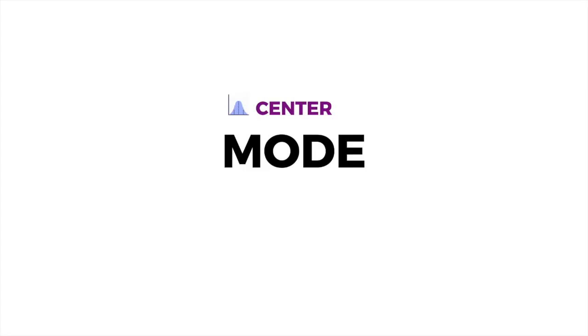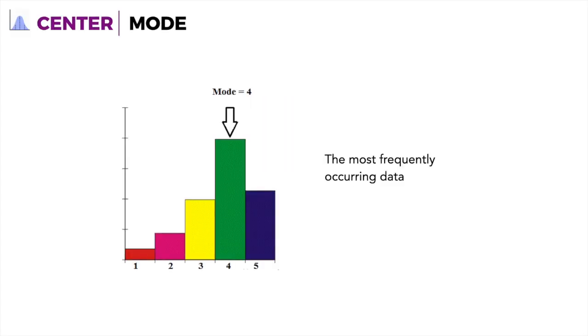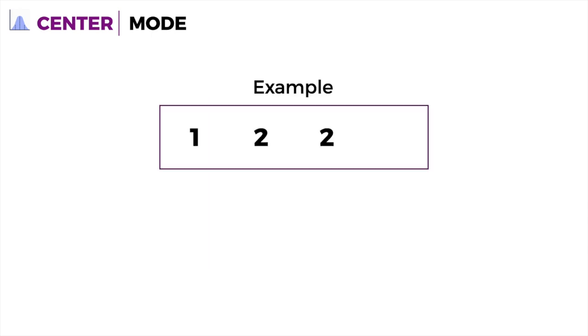The next measure of center is mode. Mode is the most frequently occurring data. If you have 1, 2, 2, 3, I mentioned 2 twice, so that is the mode. You count the frequency of different values and find which occurs most. If numbers have the same frequency and are both highest, then both are considered the mode.